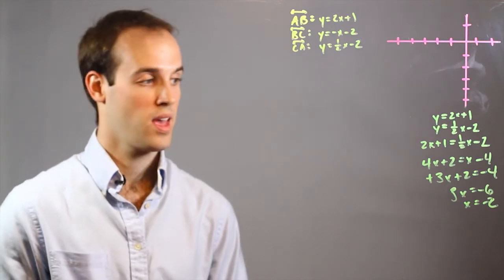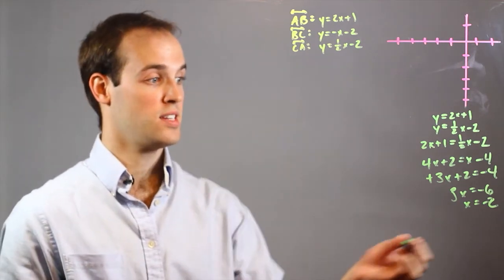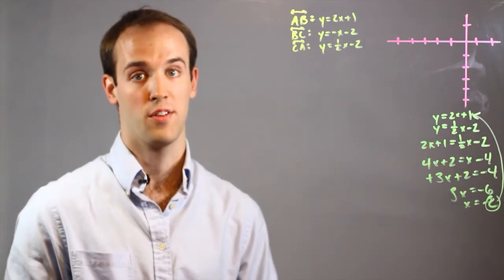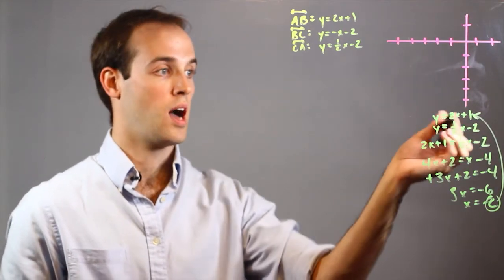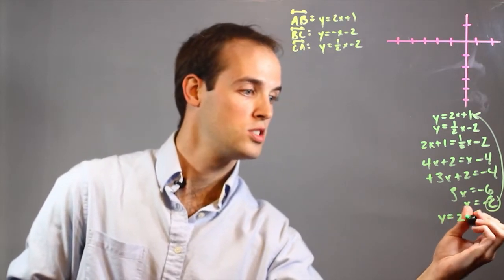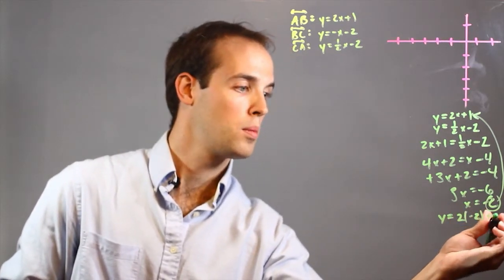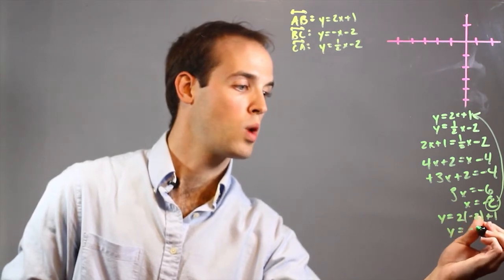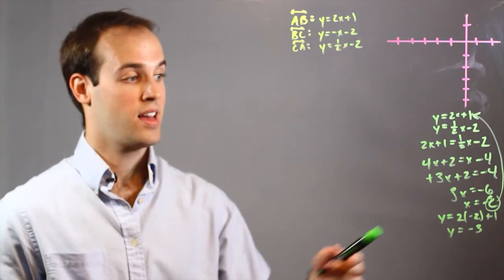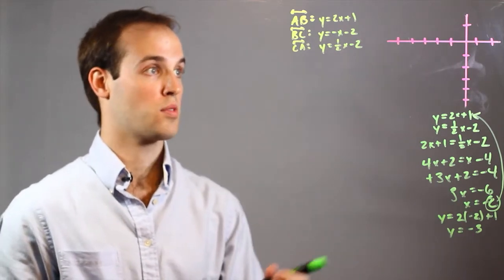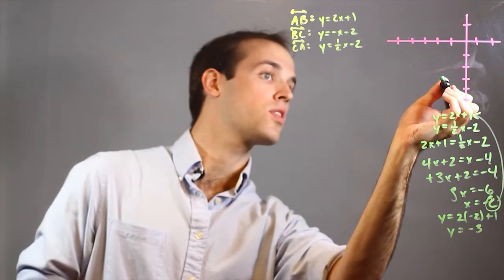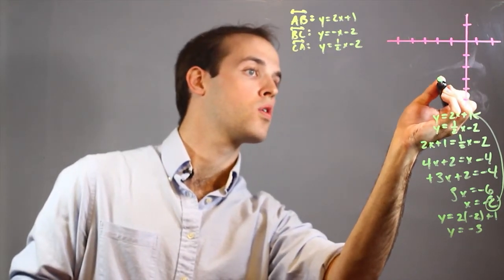And there I have the x coordinate of point A. To get the y coordinate, all I have to do is plug this value into either one of the two equations I already used. I'm going to use this one because it's easier. So I would have y equals 2 times negative 2 plus 1. y equals negative 4 plus 1, which is negative 3. So I know that point A is at negative 2, negative 3. I'll graph that at negative 2, negative 3, right there.